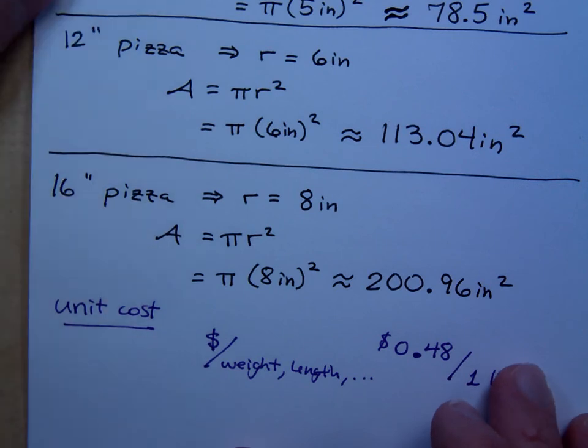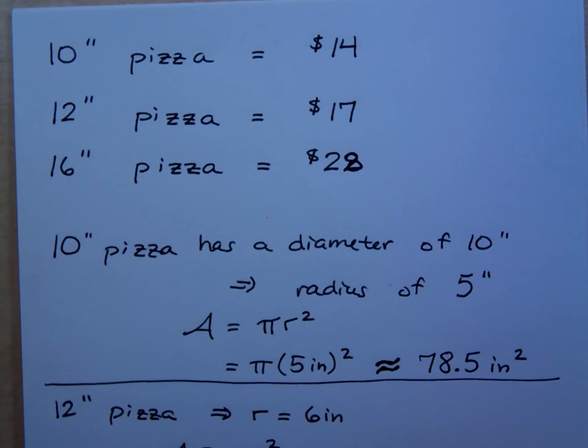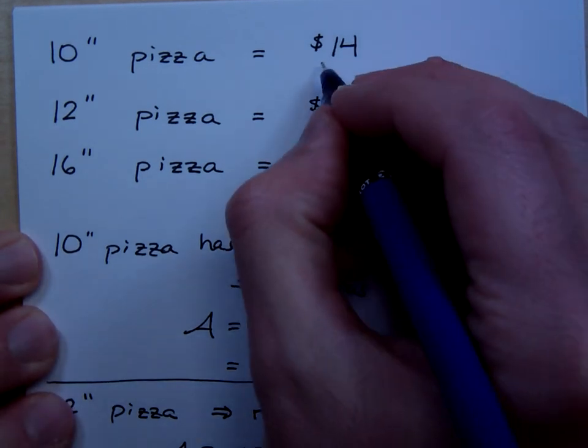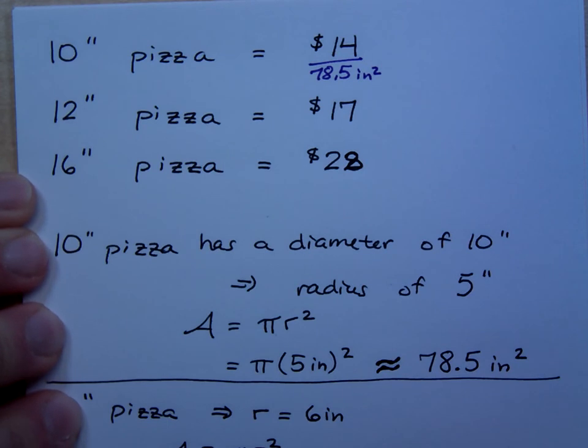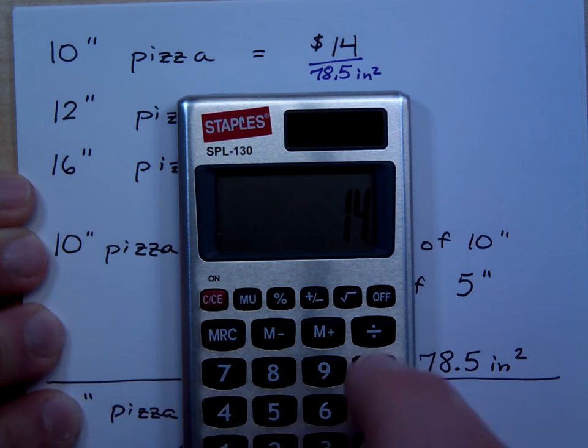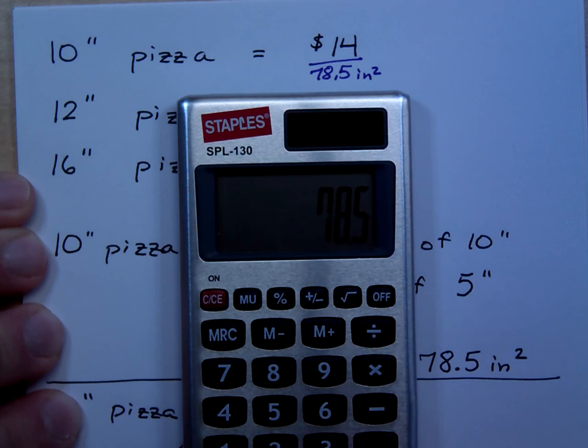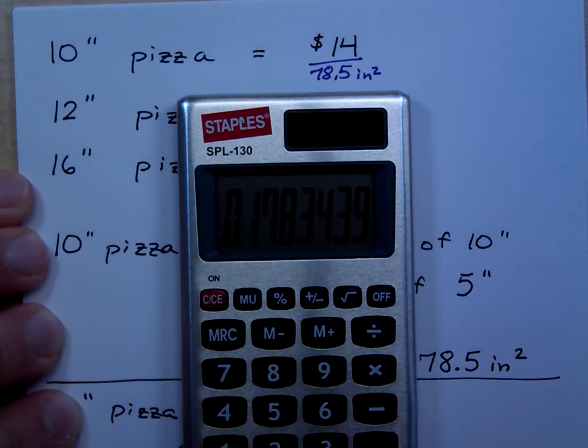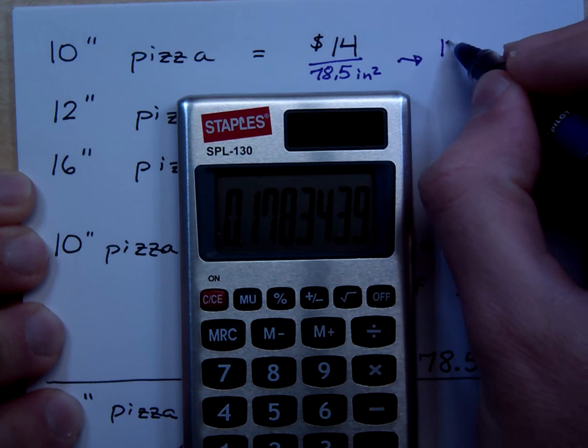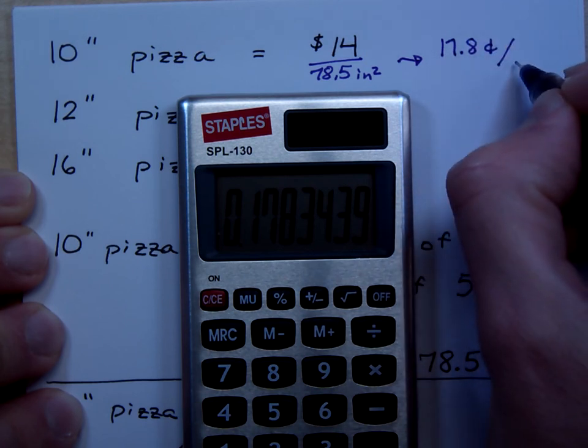So if I come back up here to the top, my 10-inch pizza was $14. But you're getting 78.5 square inches out of that, right? So what is the cost per square inch? Basically, what's the cost per bite of that pizza? Well, thank goodness I've got a calculator here. So 14 divided by 78.5 is how much? I've got this decimal, so that's 0.178. This is dollars per square inches, right? So 0.178 dollars really means how much in terms of cents? So this guy is really 17.8 cents per square inch.